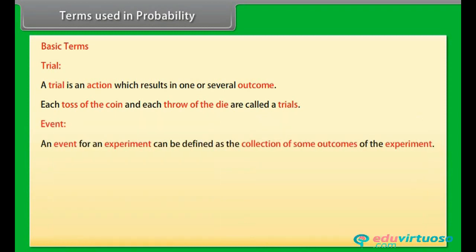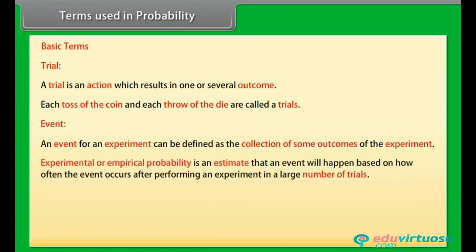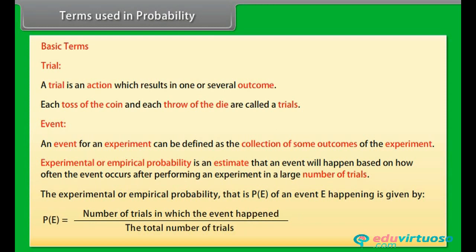Event: An event for an experiment can be defined as the collection of some outcome of the experiment. Experimental or empirical probability is an estimate that an event will happen based on how often the event occurs after performing an experiment in a large number of trials. The experimental or empirical probability, P(E), of an event E happening is given by P(E) equals number of trials in which the event happened upon the total number of trials.